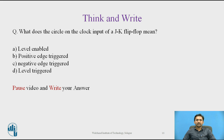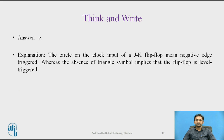A question: what does the circle on the clock input of a JK flip-flop mean? The four options are: level enabled, positive edge triggered, negative edge triggered, or level triggered. The answer is C — negative edge triggered. The circle on the clock input of a JK flip-flop means negative edge triggered, whereas the absence of a triangle symbol implies that the flip-flop is level triggered.